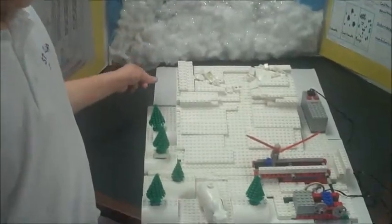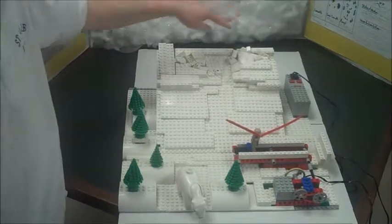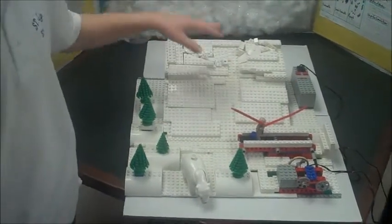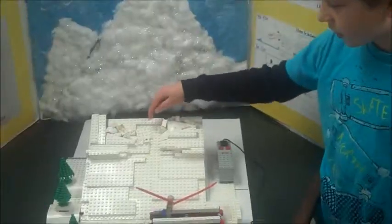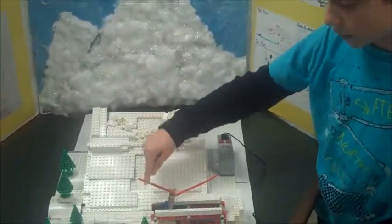This is a model of our avalanche. We made a ramp so when the snow falls, it will be actually like an avalanche, and we will try to get the man out before he gets stuck. This is the starting zone, this is the track, and this is the run-out zone.